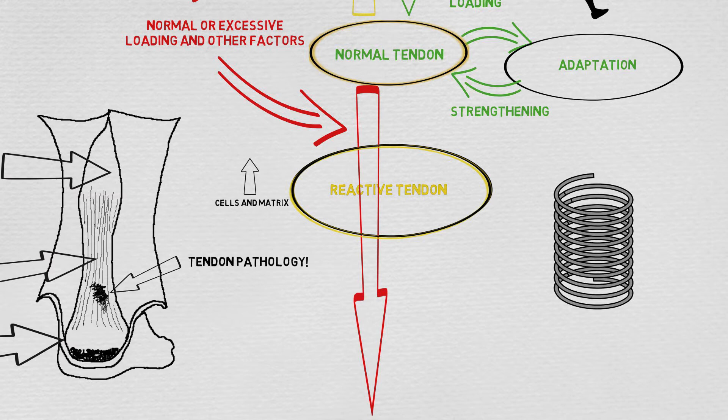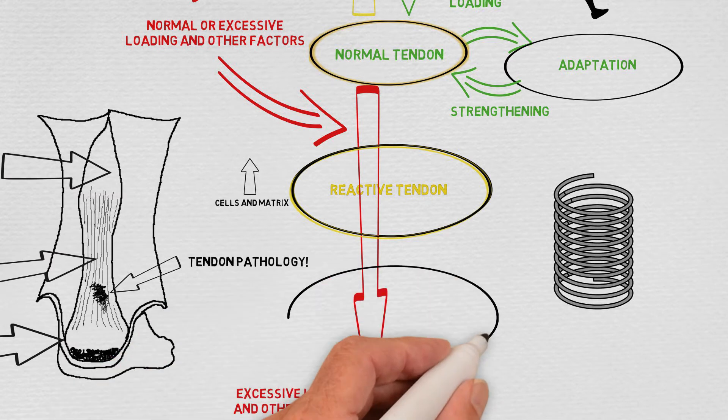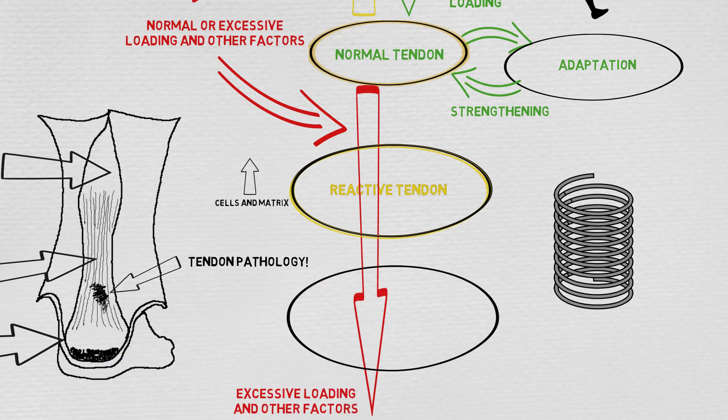Although we have stages of tendinopathy, they are not absolute and are presented here as a continuum. If the load continues to be excessive, we then move along the continuum to a tendon in disrepair.